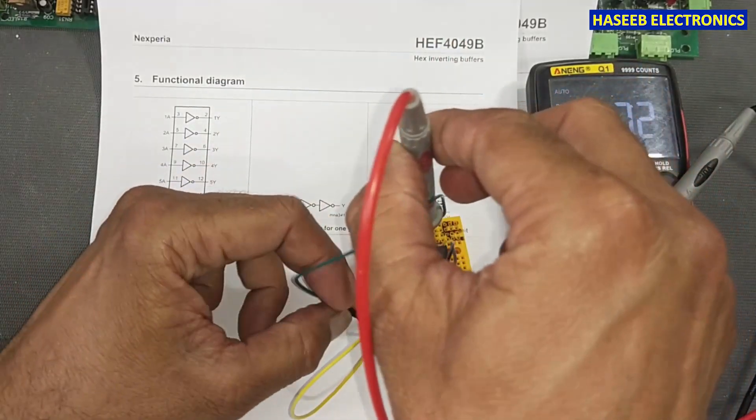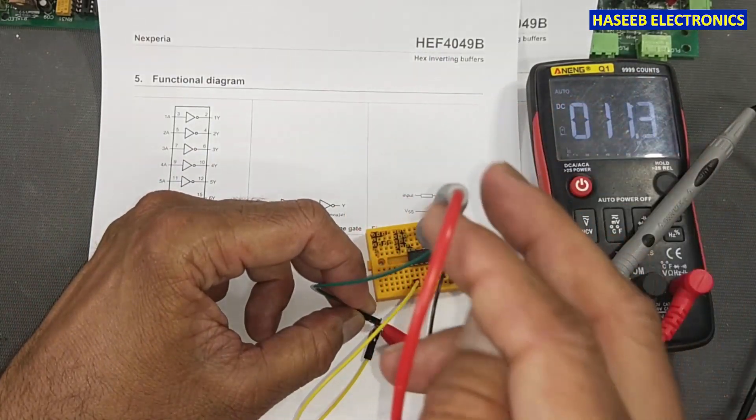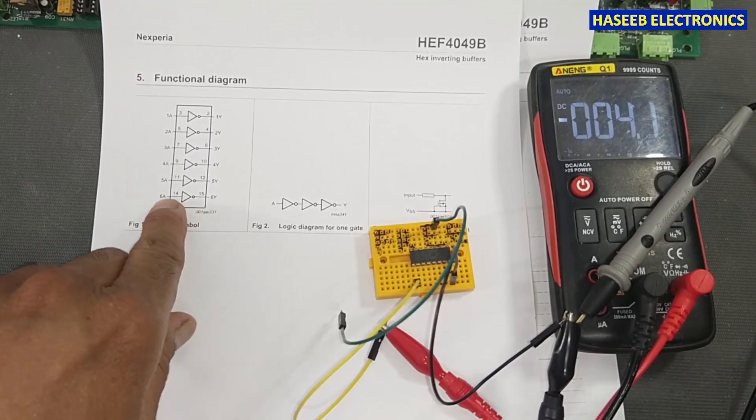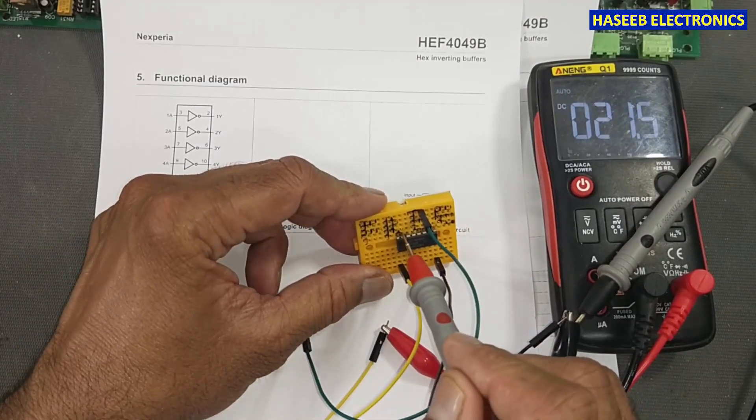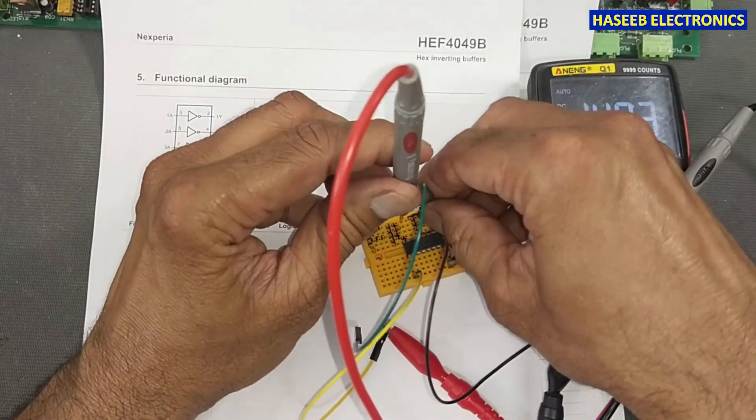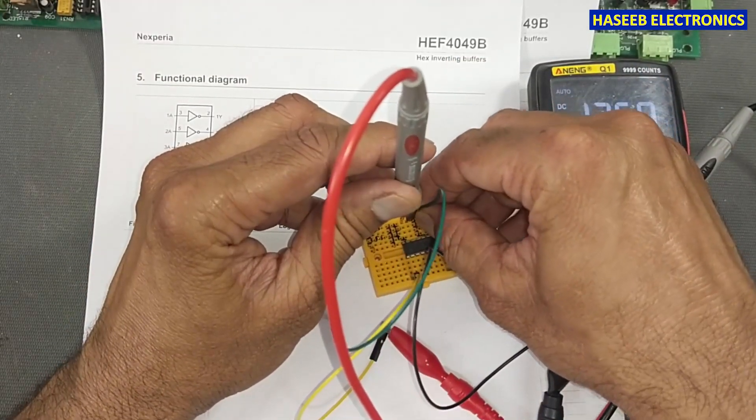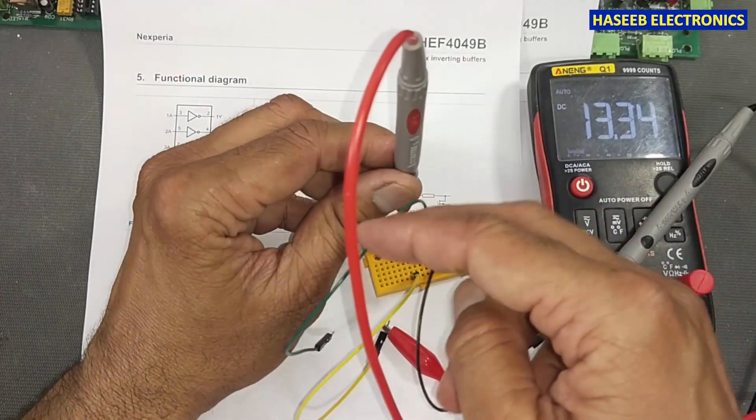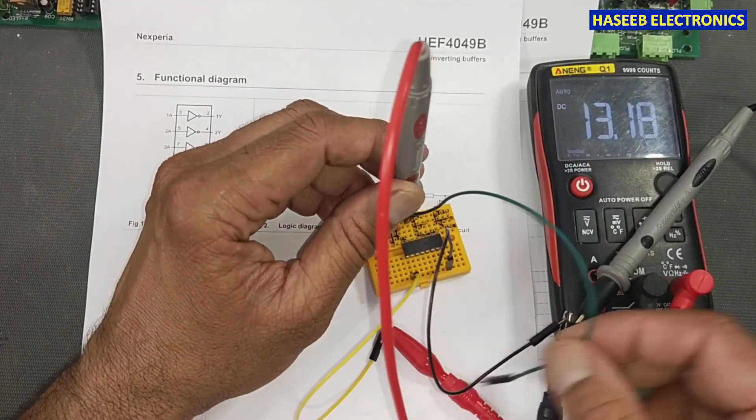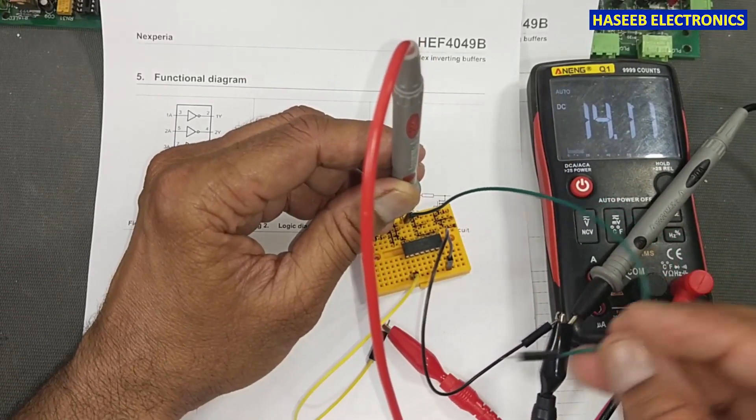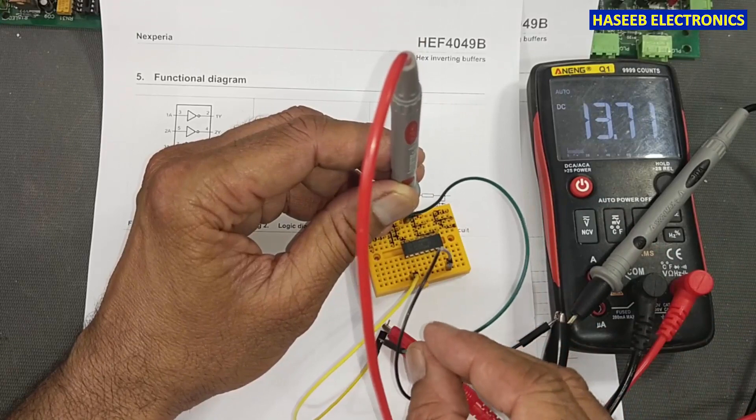Then pin 15 is output, pin 14 is input. Pin 14, the second-to-last pin, is the output pin. Here we have pin 14. Now I will connect to ground, the output is high. When I connect to positive, the output is low.